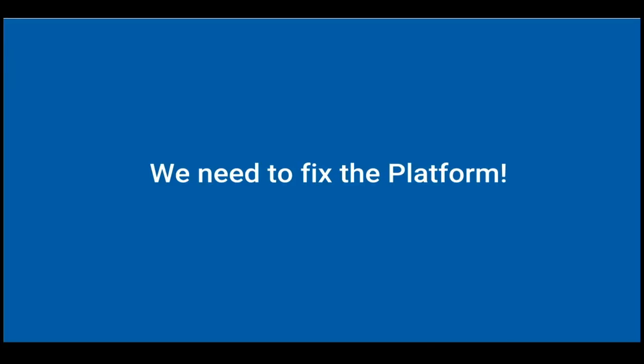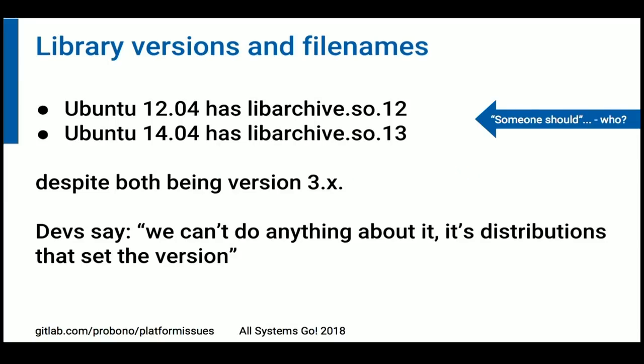I think we need to fix the Linux desktop platform — not work around it. It's really messy as of today, often for no apparent good reason. Take library versioning for example: even within the same family of operating systems, a library like libarchive can be at version 3 for quite some time, yet the same library is named differently across different versions of the same operating system. Someone should standardize this. The library developers themselves say they can't do anything about it — their version has been 3 for a long time but distributions just change this. There was a long and heated debate on GitHub about it and to this day I'm not sure who could do something about it.